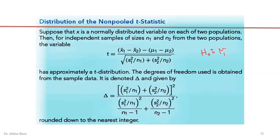If H0 states mean 1 minus mean 2 equals zero, we use the reduced formula. However, if the difference of two means is stated in the problem — for example, mean 1 minus mean 2 equals 10, such as boys scoring 10 points more than girls — then we substitute that difference value into the formula.